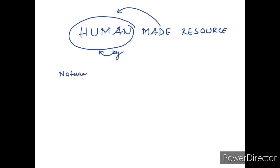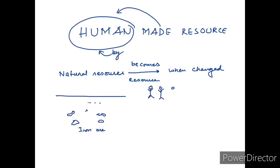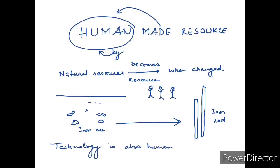We have human-made resources, that is to say, resources which humans have made from natural resources present in the environment. Humans modify them according to their needs and requirements. For example, iron ore which is there in the environment, but humans have modified it according to their needs and have made many tools. Technology is also a human-made resource.